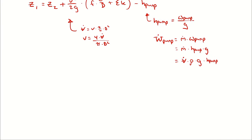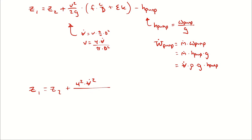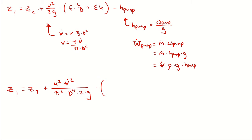So now I have Z1 equals Z2 plus 4 squared times volumetric flow rate squared divided by pi squared times diameter to the fourth times 2 times gravity, multiplied by the quantity F times L over D plus the sum of K.